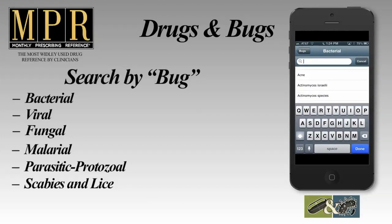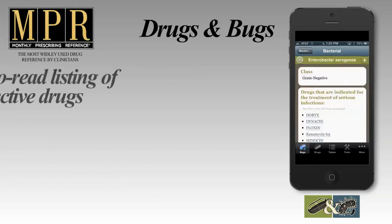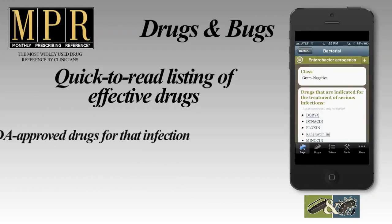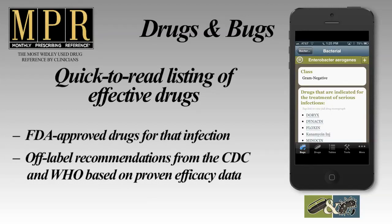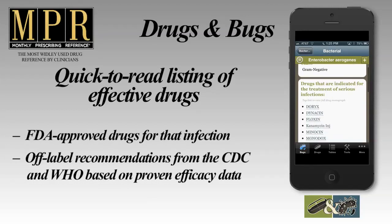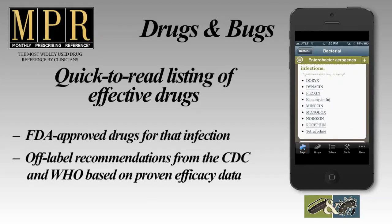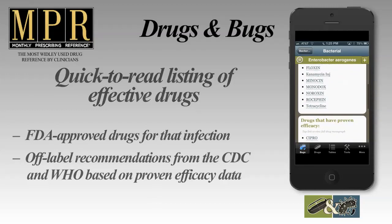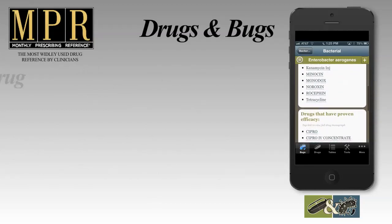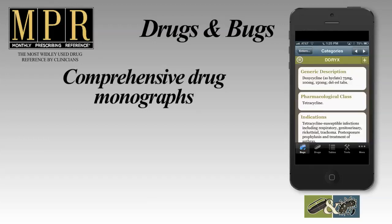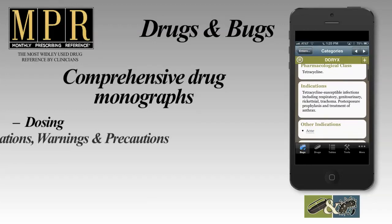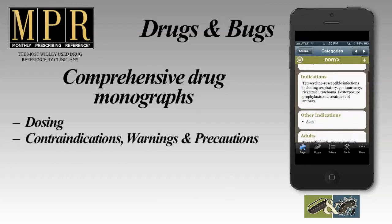Use Smart Search to quickly find what you are looking for. Drugs and Bugs features a quick-to-read listing of drugs indicated against that pathogen, and drugs with proven efficacy based on data from the Centers for Disease Control and the World Health Organization. Tap on any drug name to view the full drug monograph, with dosing information and contraindications.